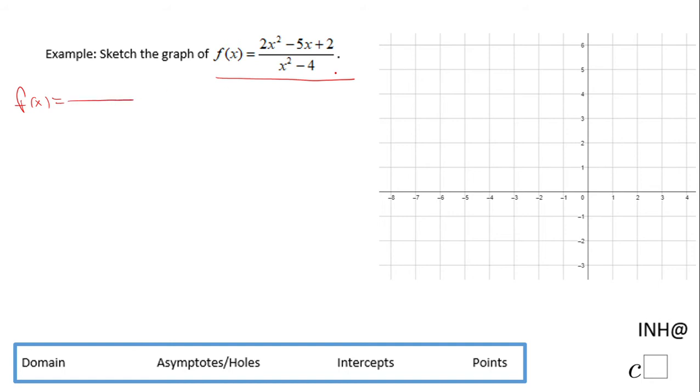I'm gonna start with this denominator. x squared minus 4 is the difference of squares, so that should tell me x minus 2 times x plus 2.